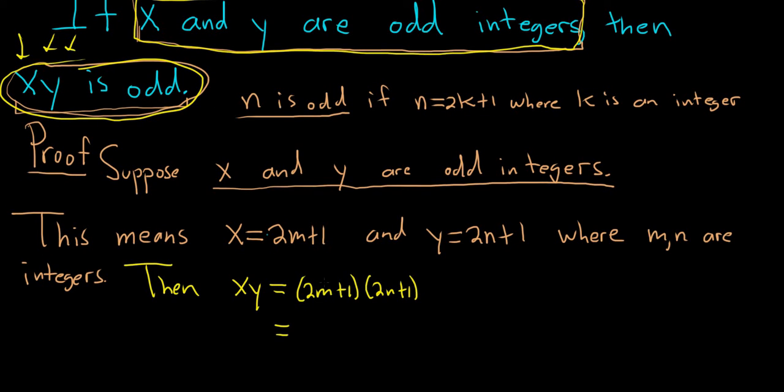Let's see, so we'll do 2m times 2n, that'll give us 4mn, and then 2m times 1 is 2m. 1 times 2n is 2n, and then 1 times 1 is 1.